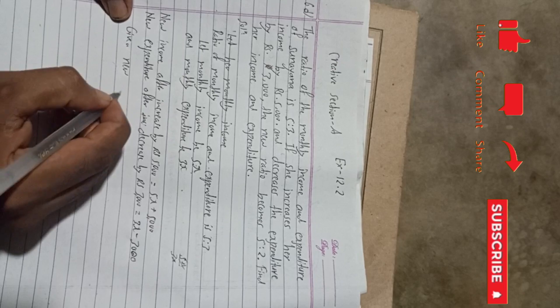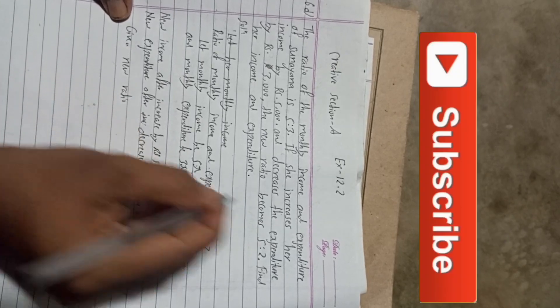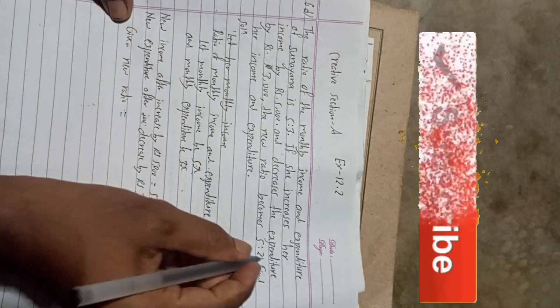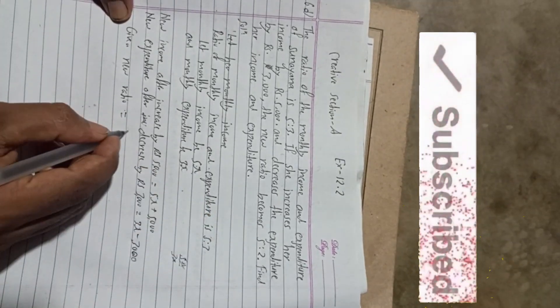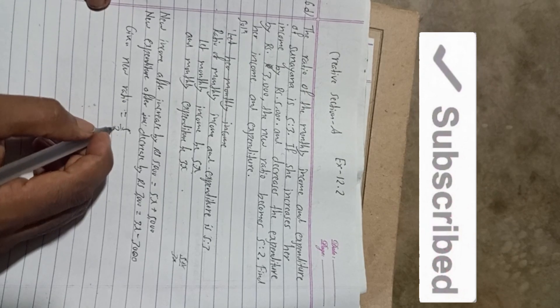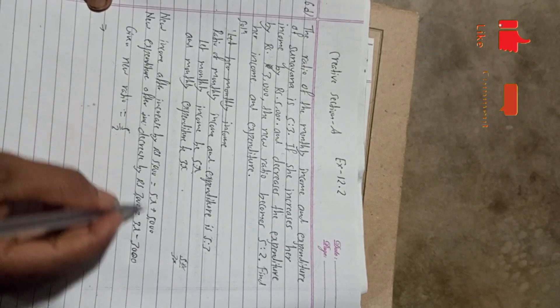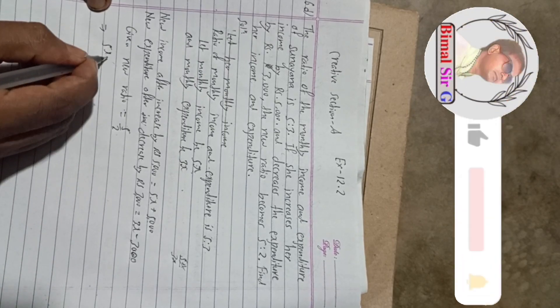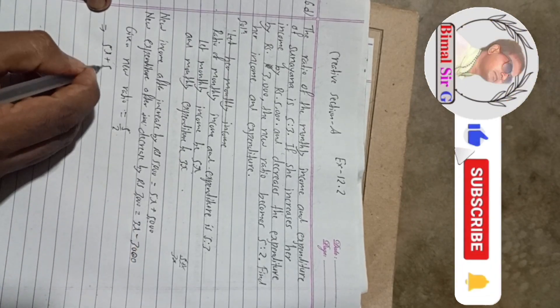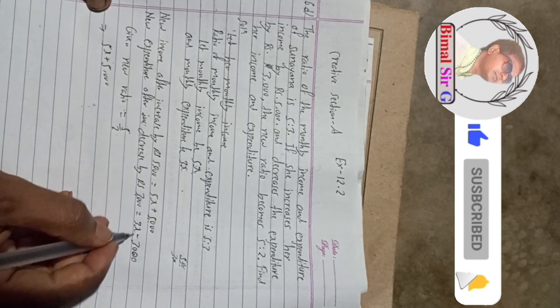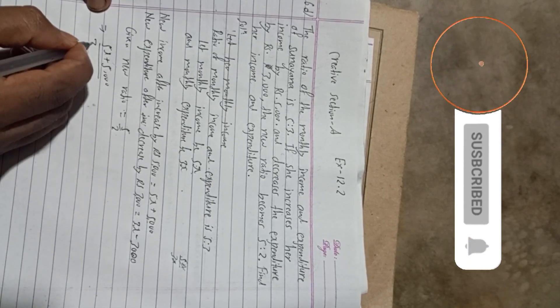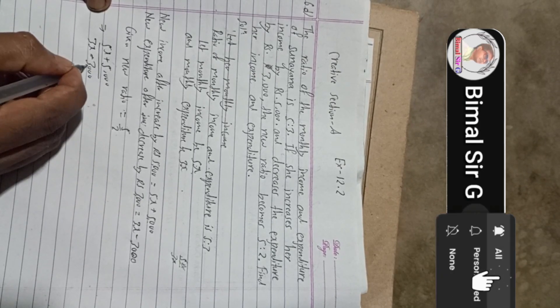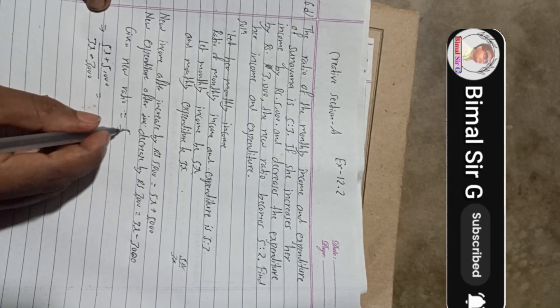Given, new ratio becomes, means that is, new ratio is equal to 5 is to 2, means 5 by 2. That means this implies what? This, this, we were given, so this is 5y plus 5,000 by 3y minus 3,000. So this will be now here 5 by 2.